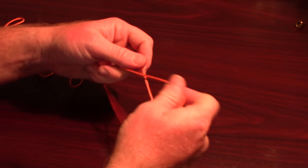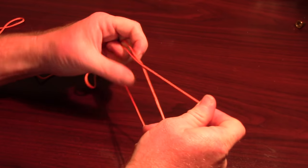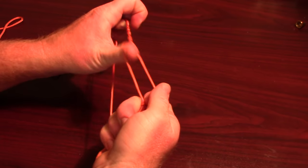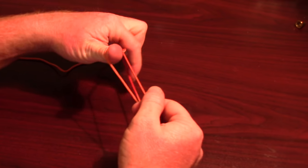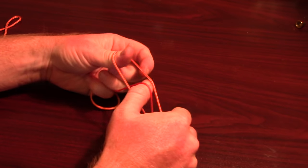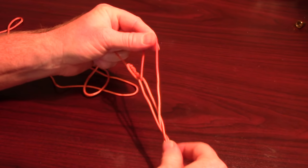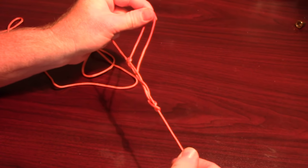Let's see that again. Make a loop, hold the loop open with your lower fingers, twist the line 3-4 times. Pull the loop up through the middle of the twists, and pull your line tight to close the loop together.